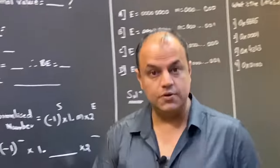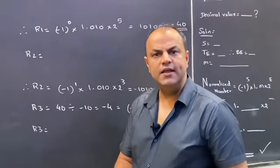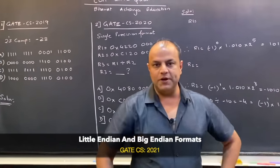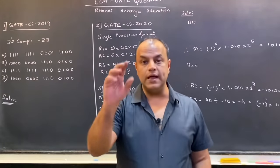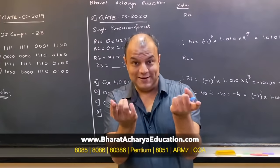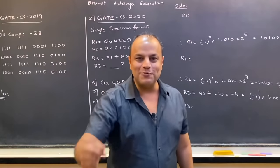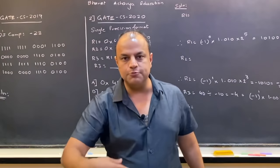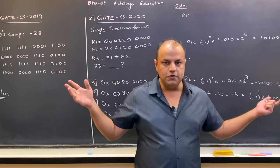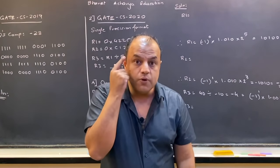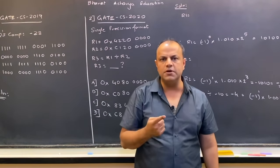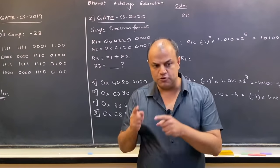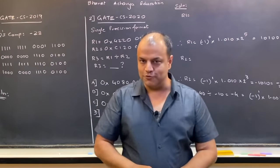The last and most interesting question involves the endianness of a number. There's something called little-endian form and big-endian form. They've said a particular number has a certain value in little-endian form and another in big-endian form — they haven't given the values directly, but said the difference between the two values is 255. Figure out what the number was. This is a very intelligent question — you won't find the answer in any textbook directly because it comes from your concepts. The key is building your conceptual understanding so you can tackle similar questions in future papers.